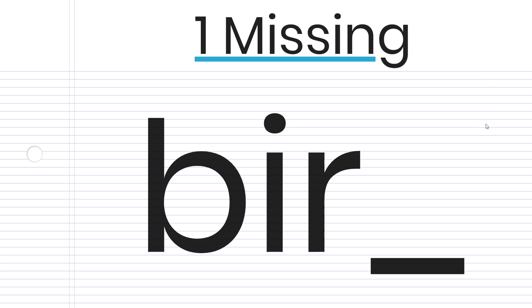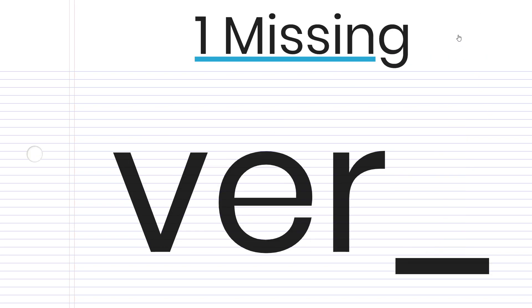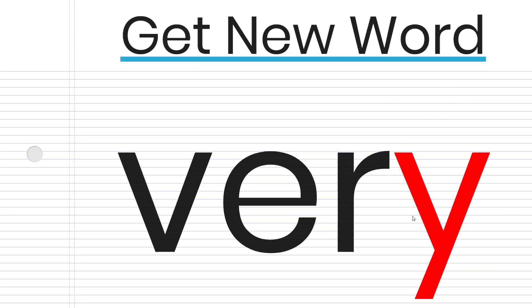Our next one is going to be an animal that's small — this is 'bird,' and we're missing the D. And our next one: this word is 'very.' You could say something is very big or very tall.